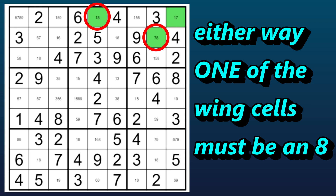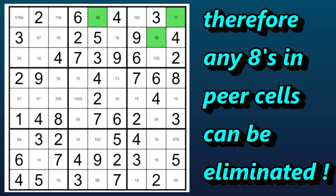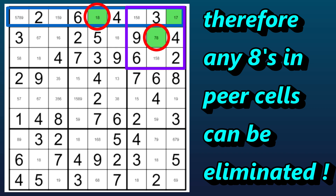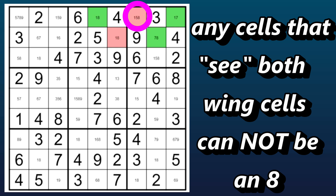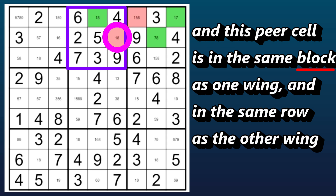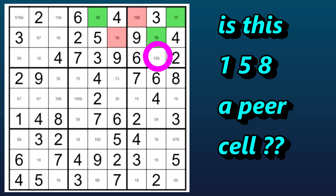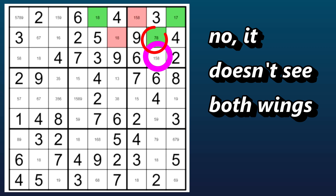If you need to, please rewind and try following the logic more closely. Once you understand the logic, it should make sense. So now, if one of these cells has to be an eight, then any cell that sees both wing cells cannot be an eight. That means any eights in peer cells can be eliminated. So we're looking for peer cells that are both in the same row and block as the two wings. This cell with one-five-eight is in both the same row as one of the wings and in the same block as the other wing, so it's considered a peer cell. And this cell with the one-eight is in the same block as one wing and in the same row as the other wing, so it's also a peer cell. What about this other one-five-eight cell? No, it doesn't see both wings — it sees this wing since it's in the same block, but it doesn't see this one. So it's not a peer cell.